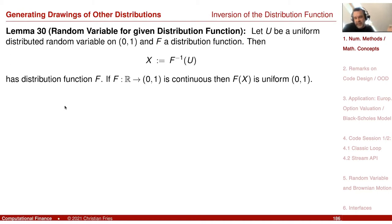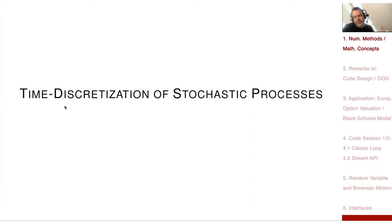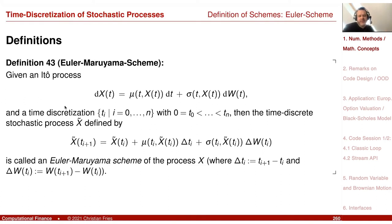If we want to generate other distributions like normal distributions, there is the inversion of the distribution function. Then we moved on — we know how to sample a random variable and approximate the expectation. Then we moved on to stochastic processes and the time discretization of the stochastic process, specifically the Euler scheme, which allows us to generate a family of random variables from the specification of the SDE.